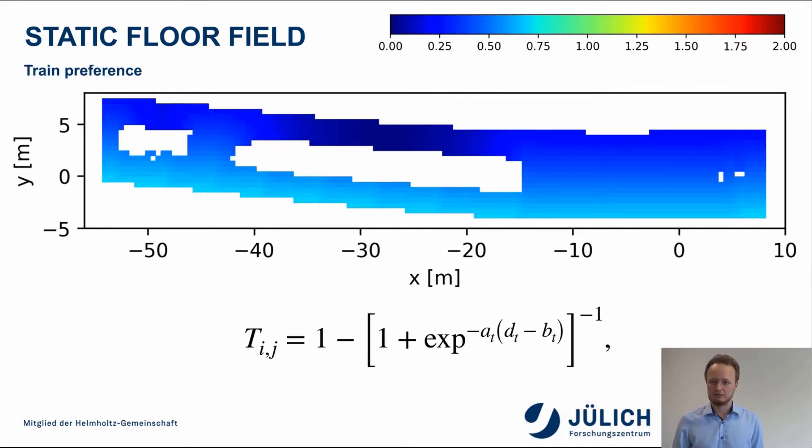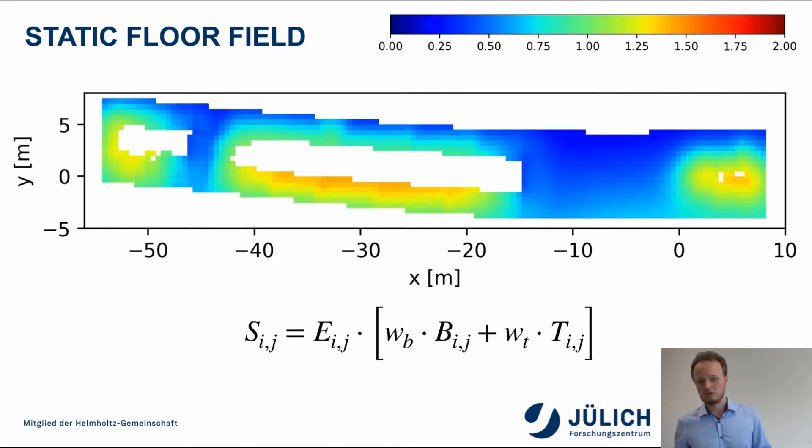Another thing is that pedestrians tend to stand in the area or the side of the platform where they expect their awaited train to arrive. For example, assuming that the next train will arrive on the bottom part, here you can see that pedestrians will somehow, or somehow the parts on the bottom of the platform are more preferable than the ones on the top. Combining all of these three influences, or combining all of these three potential fields, leads to static floor field we will use later on.